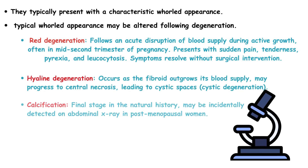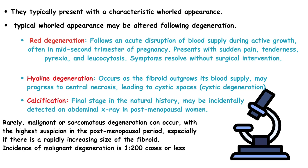Fibroids typically present with a characteristic whorled appearance. This typical whorled appearance may be altered following degeneration. Red degeneration follows an acute disruption of blood supply during active growth, often in the mid-second trimester of pregnancy. It presents with sudden pain, tenderness, pyrexia, and leukocytosis. Symptoms resolve without surgical intervention. Hyaline degeneration occurs as the fibroid outgrows its blood supply and may progress to central necrosis, leading to cystic spaces.